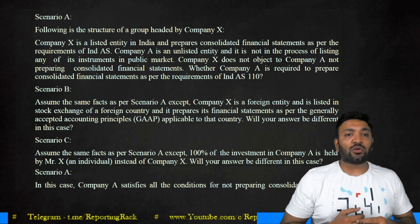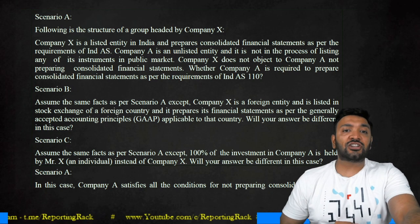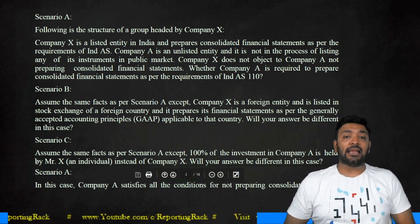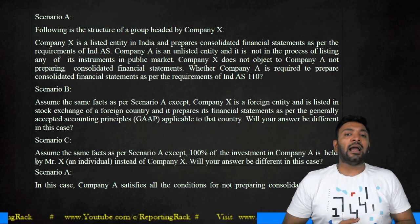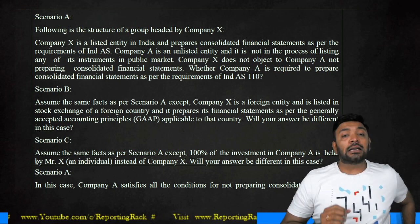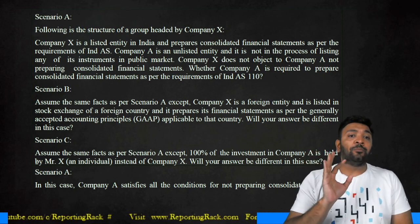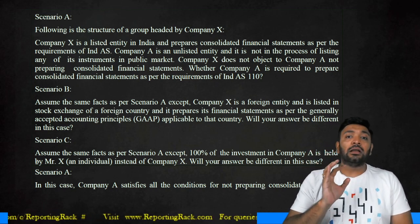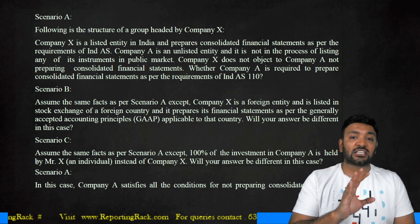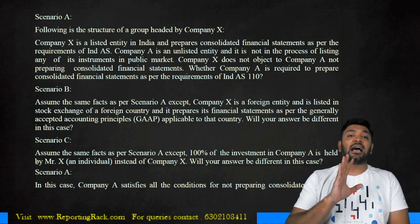Let's solve some illustrations. Look at the first one, Scenario A: the following is a structure of a group headed by Company X. Company X is a listed entity in India and prepares consolidated financial statements as per the requirements of Ind AS. Company A is an unlisted entity and is not in the process of listing any of its instruments in a public market. Company X does not object to Company A not preparing its financial statements. Whether Company A is required to prepare consolidated financial statements as per Ind AS 110.